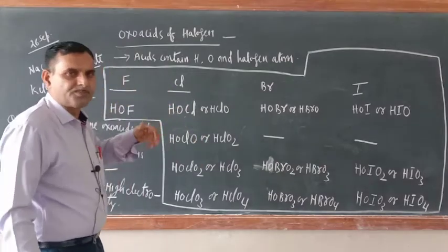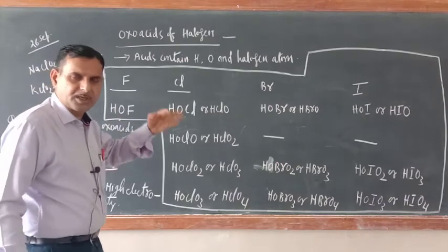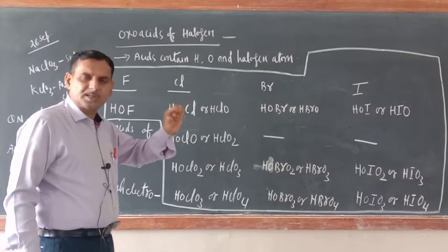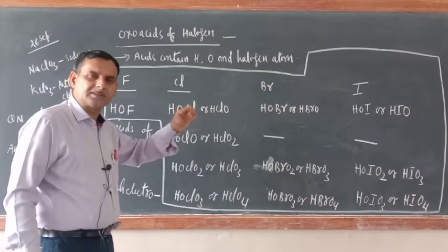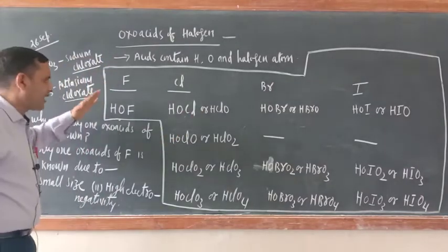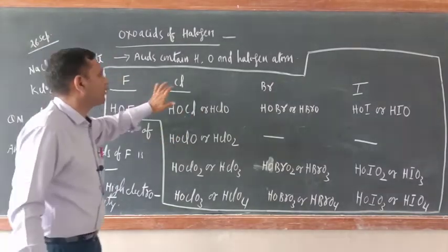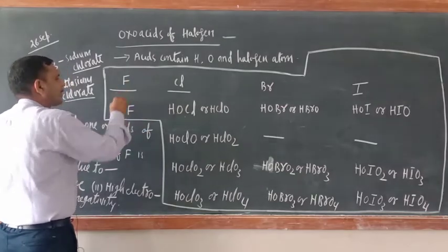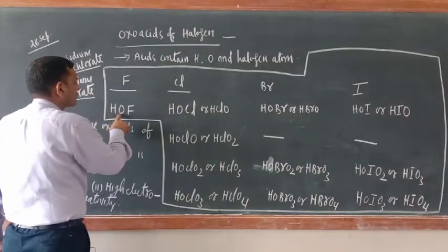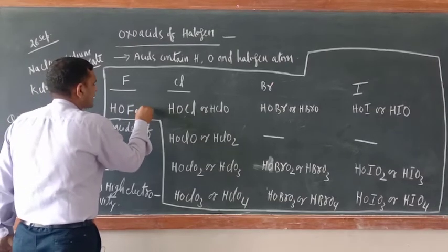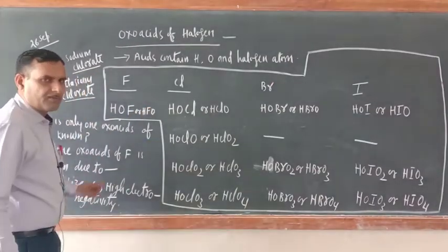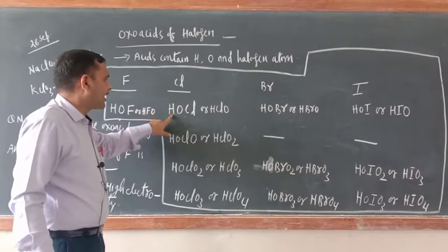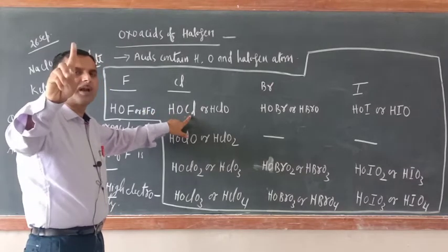H3PO3 is the oxo acid of phosphorus. If you see clearly, along with the concerned atom — phosphorus, sulfur, nitrogen — hydrogen and oxygen are also present. The same is the case with halogens. Fluorine is forming only one oxo acid: HOF (or HFO). Remember, whenever you are writing the formula of oxo acids of halogens, between hydrogen and halogen, at least one oxygen must be there.